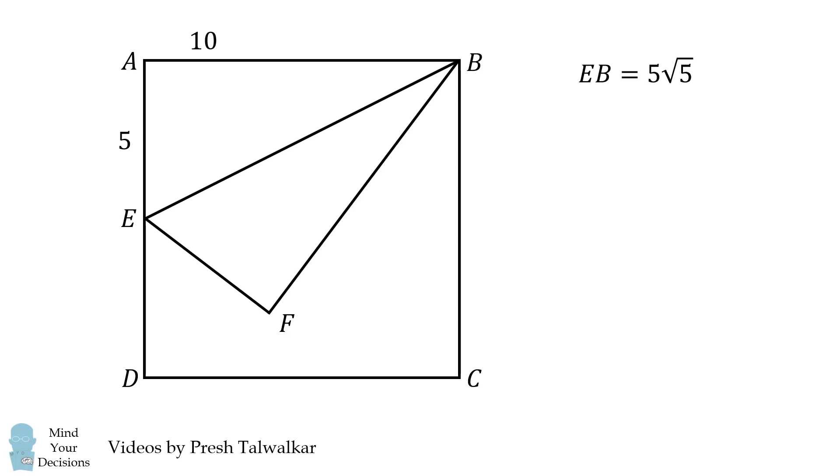This means FB has a side length equal to 10. From here, suppose angle ABE is equal to theta. That means angle EBF is also equal to theta. Now, construct FP that's perpendicular to the side AB.